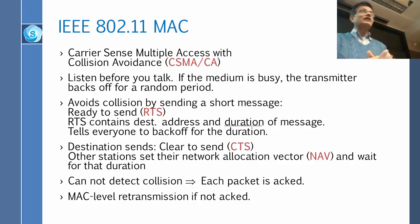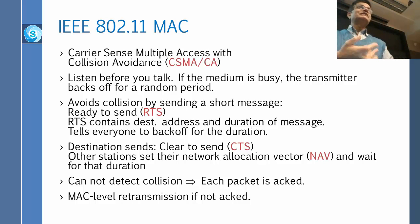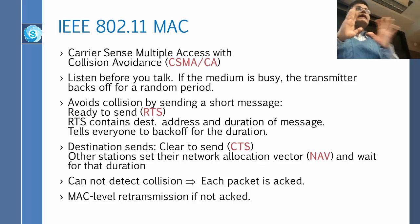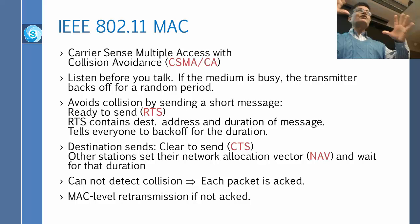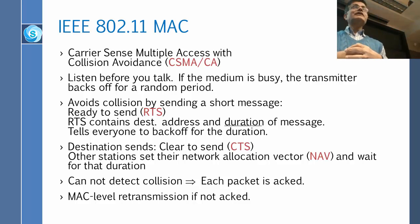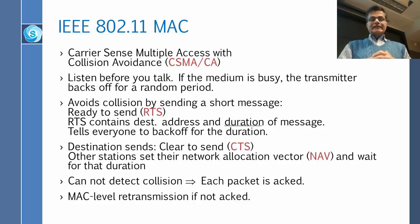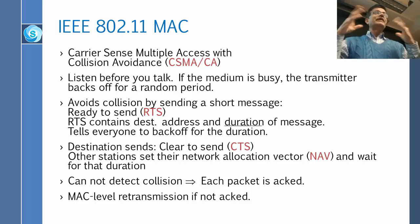RTS contains several pieces of information. RTS says: I want to talk to B, and I want to talk for 10 milliseconds — the duration of the message. Everybody who can listen hears it, and they all know that once this guy starts, he's going to be there for that duration. The destination then sends clear to send, and the destination is most often the base station.